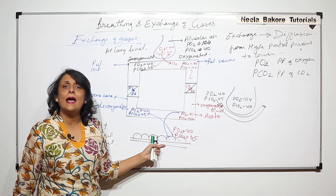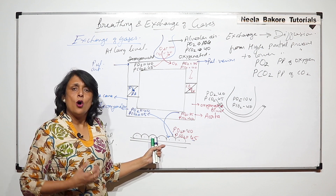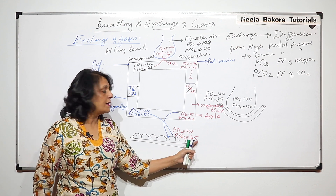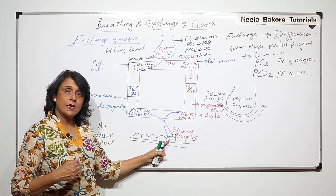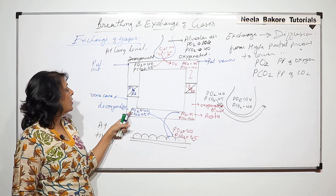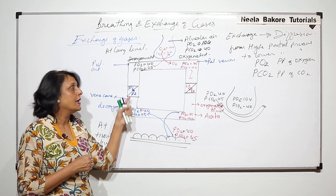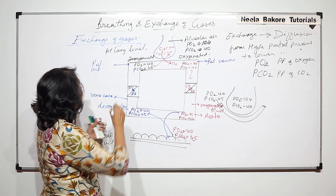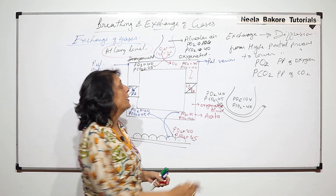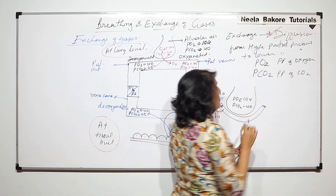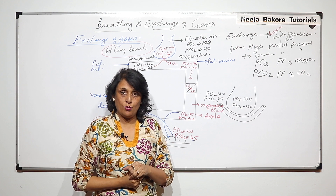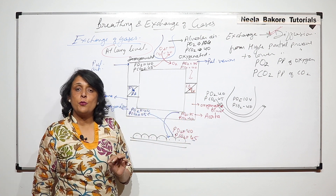If the tissue is very active, for example skeletal muscle under heavy exercise, the oxygen level can be even lower and CO2 even higher than the standard values, depending on how active the tissue is. The values can change accordingly. The CO2 produced in tissue moves from higher to lower partial pressure back into the blood, making it deoxygenated, which then returns to the right side of the heart and then to the lungs — so exchange occurs at both lung level and tissue level by simple diffusion.